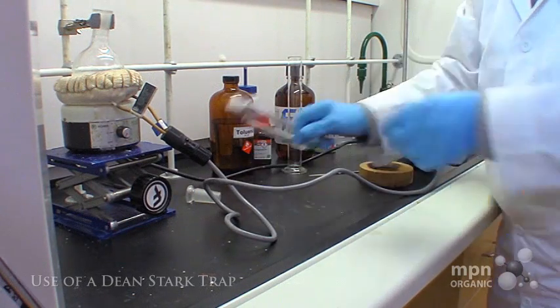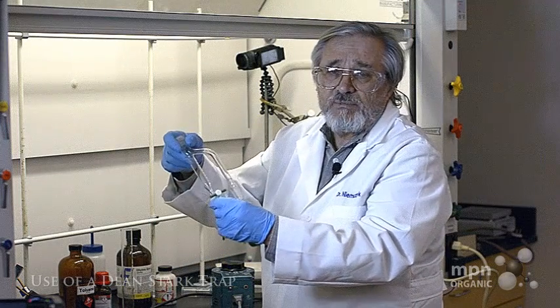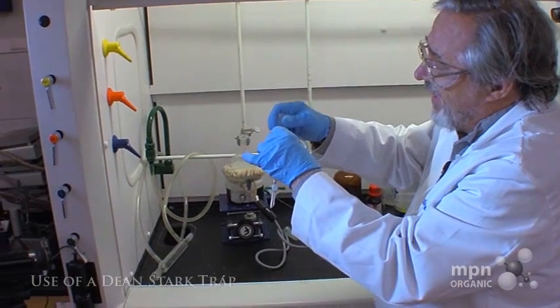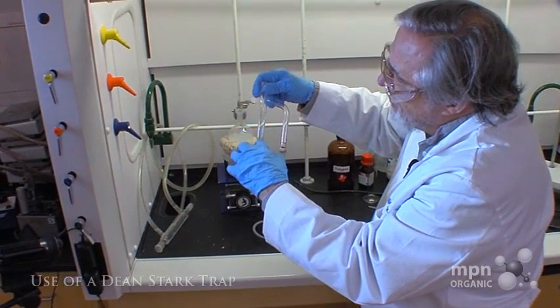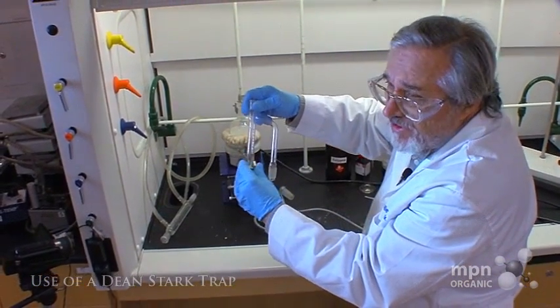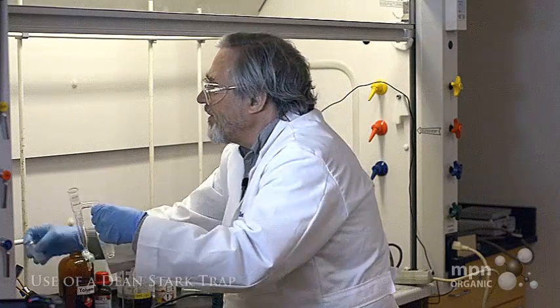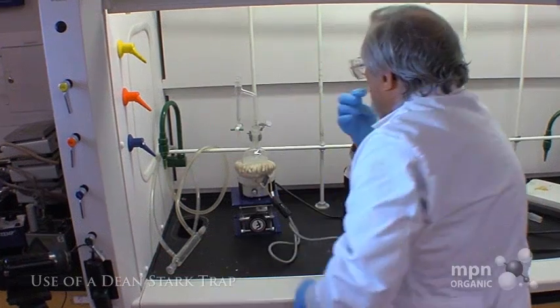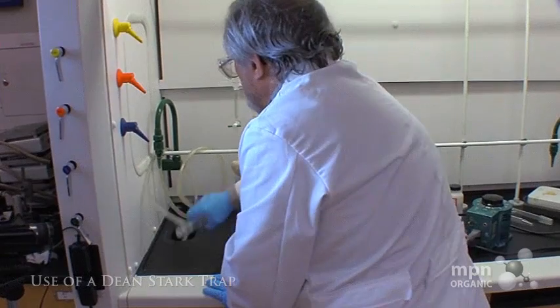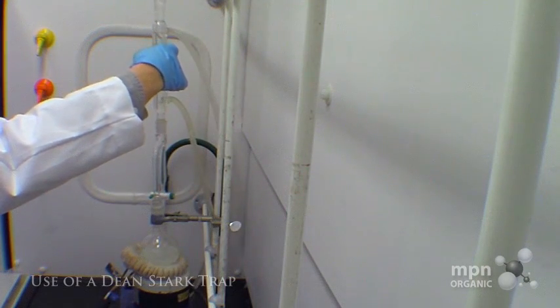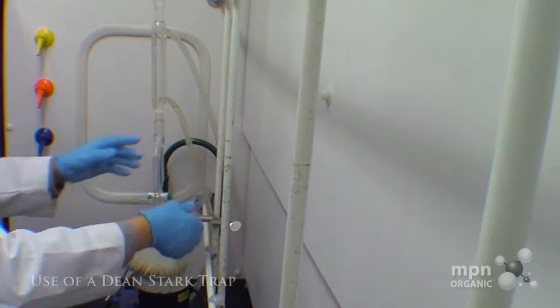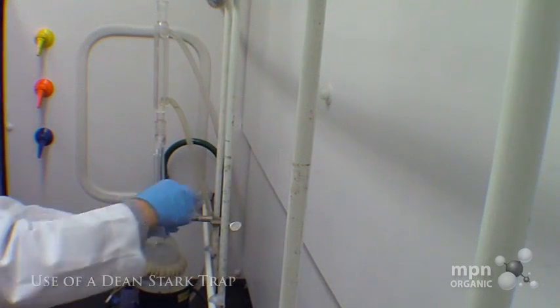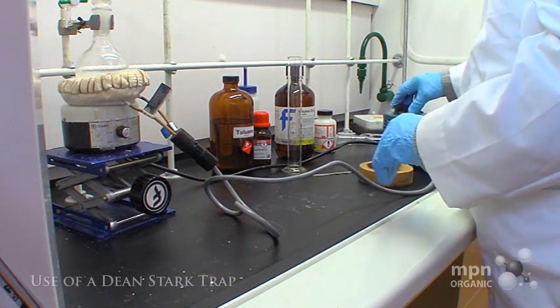Then I'm going to use what we call a Dean-Stark trap—this is what the whole thing is all about. This Dean-Stark trap is a very simple affair. You can see it's got a graduated test tube here which ends in a stopcock. I'm going to put this into the reaction vessel. And you'll see what happens when this starts to heat up. Let's get that nice and tight there, and let's start this.